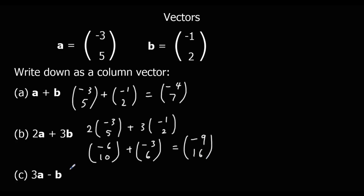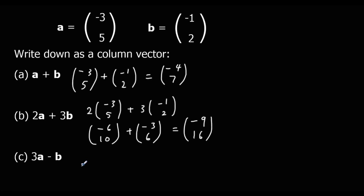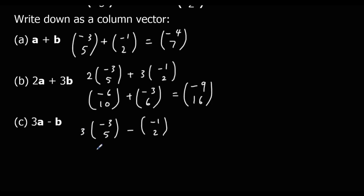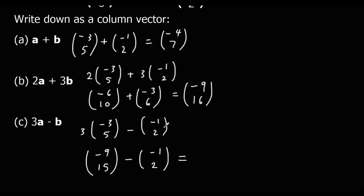Finally, 3a minus b. Three of the minus three, five vectors gives minus nine, fifteen. Then we take away minus one, two. Along the top: minus nine minus minus one, so minus nine plus one is minus eight. On the bottom: fifteen minus two is thirteen. So 3a minus b equals the column vector minus eight, thirteen.